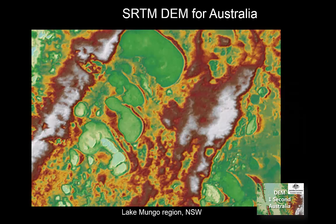Here's an example of what that looks like when processed — we see Lake Mungo in western New South Wales. The topography is quite small in that area, it's quite a flat region, but you can clearly see the lake itself as well as some of the topography around it. This is available from Geoscience Australia, referred to as the 'one second' (about 30 meters) DEM, available from the Geoscience Australia website.